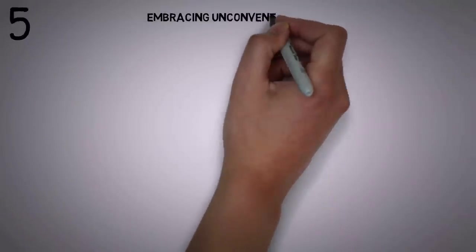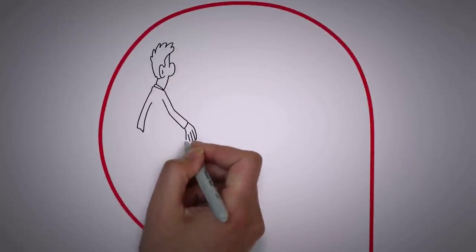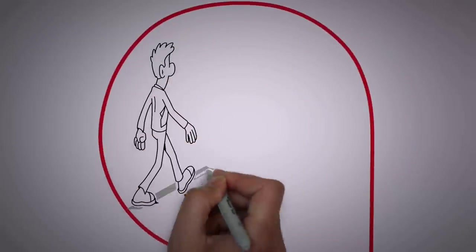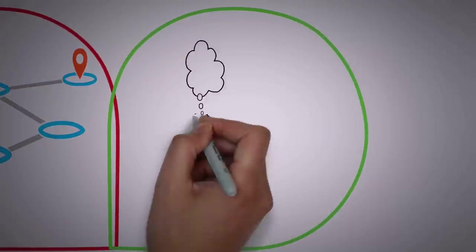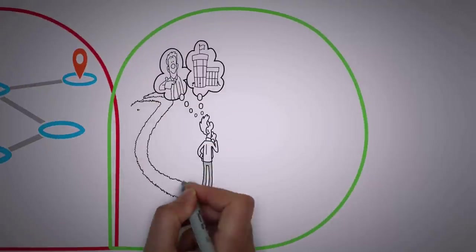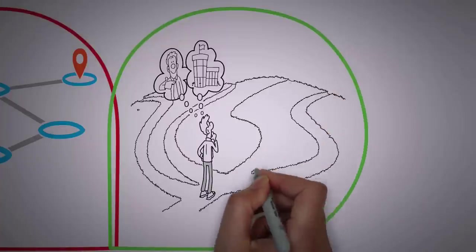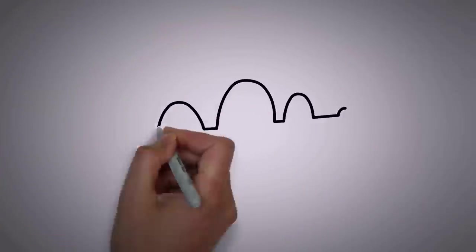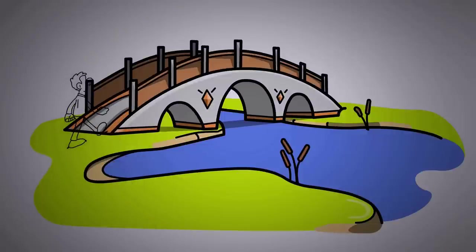Number 5. Embracing unconventional paths. One of the defining characteristics of a true Sigma male is their unwavering courage to embrace unconventional paths. They possess the audacity to challenge societal norms, break away from the confines of conformity, and venture into uncharted territories. They understand that true fulfillment lies in following their unique passions and interests, even if it means walking a path less traveled.